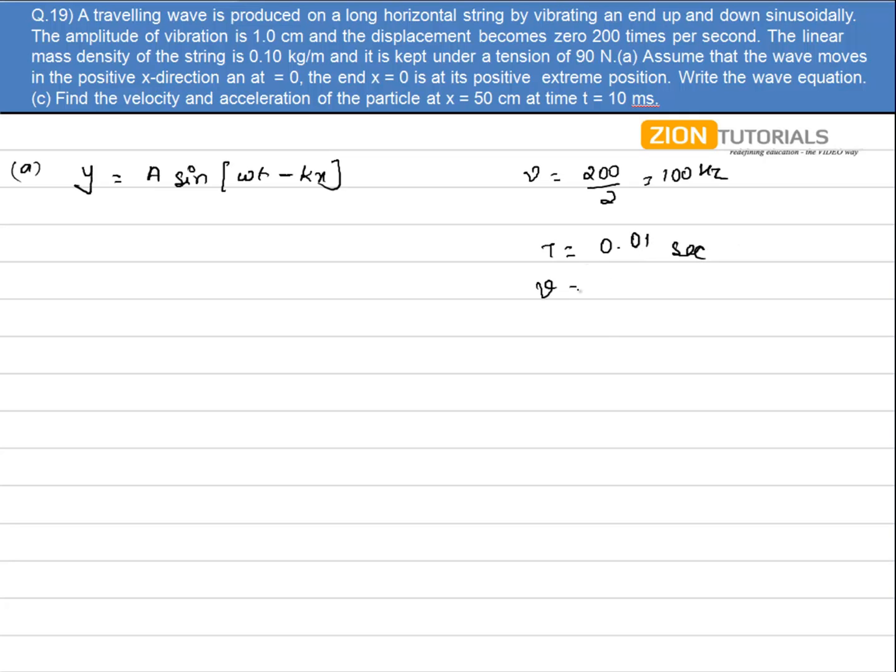Now the wave velocity is given by √(T/μ). So I substitute the value, that is √(90/0.1). It comes out to be 30 meters per second. And another thing, the wave velocity is given by λ/T. So λ comes out to be 30 × 0.01, that is 0.3 meters.